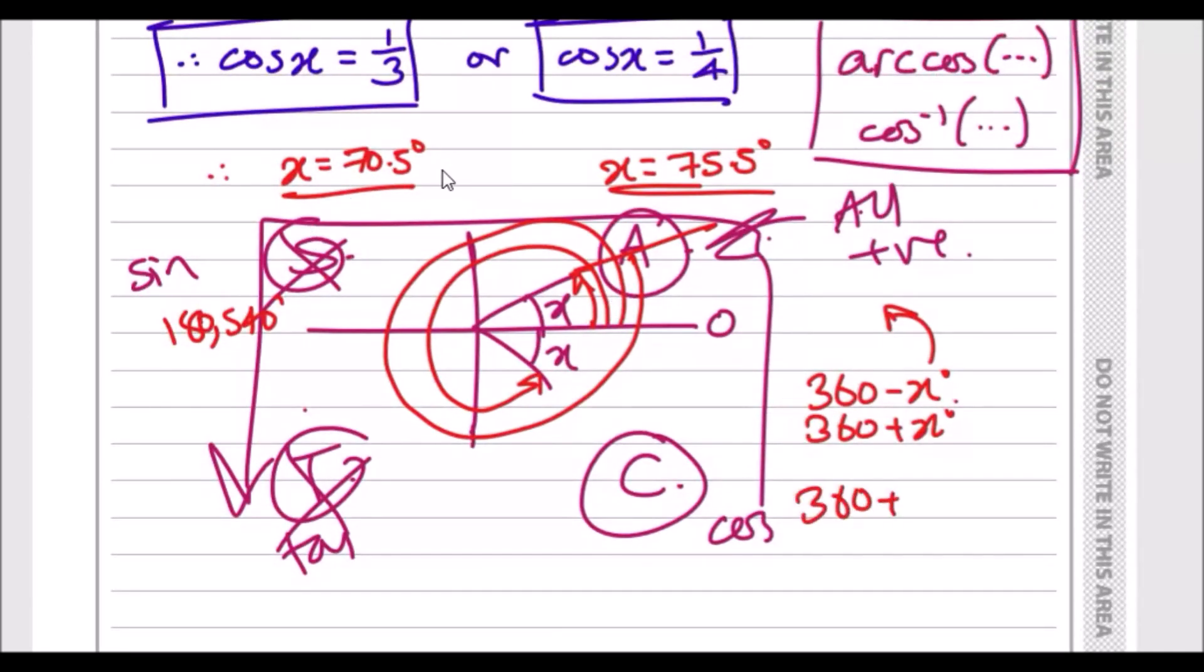There's always two answers to give here. If you replace x with 75.5, you can also get 435.5 degrees. And that's it guys - that's literally all you need to know about CAST diagrams.